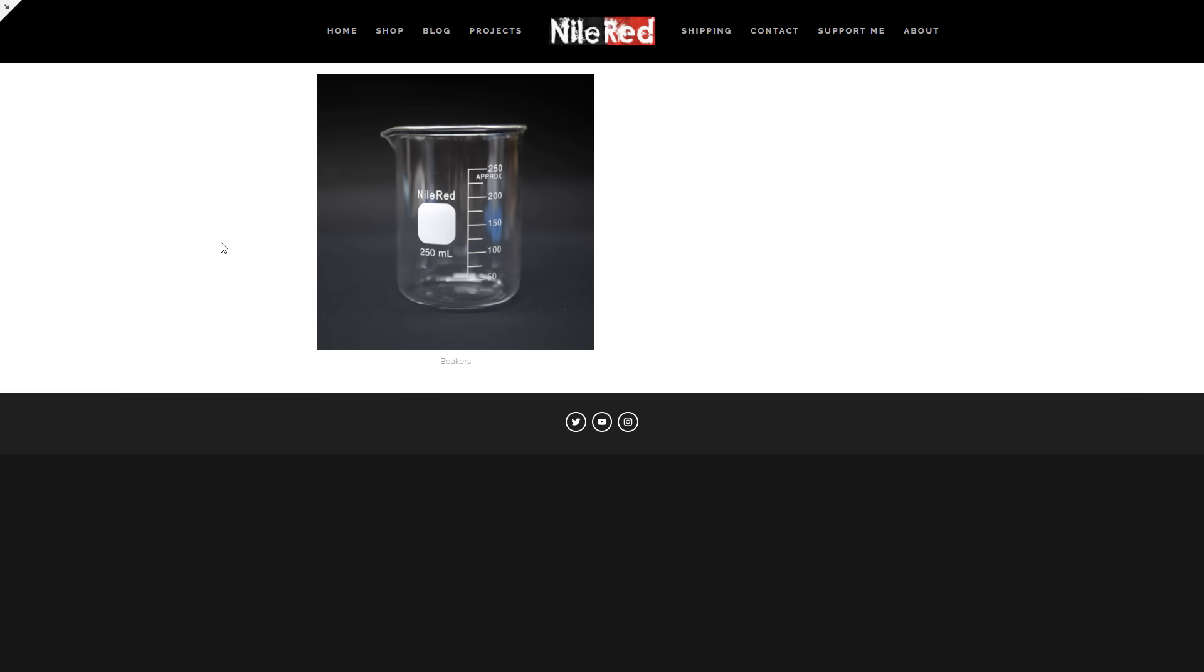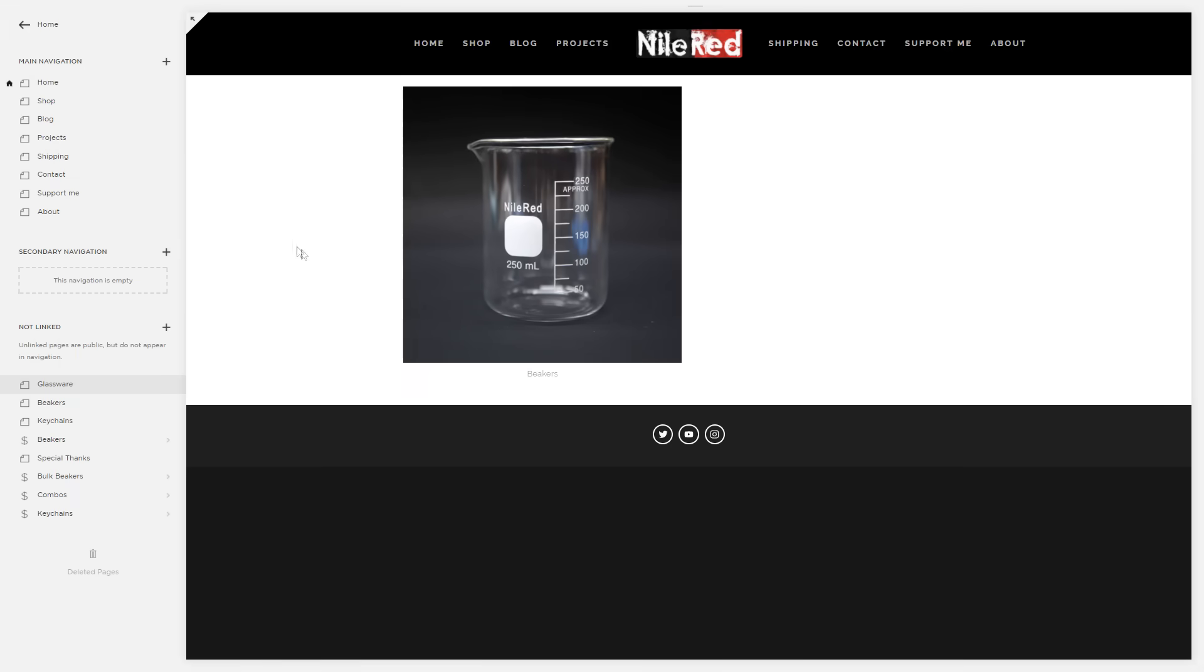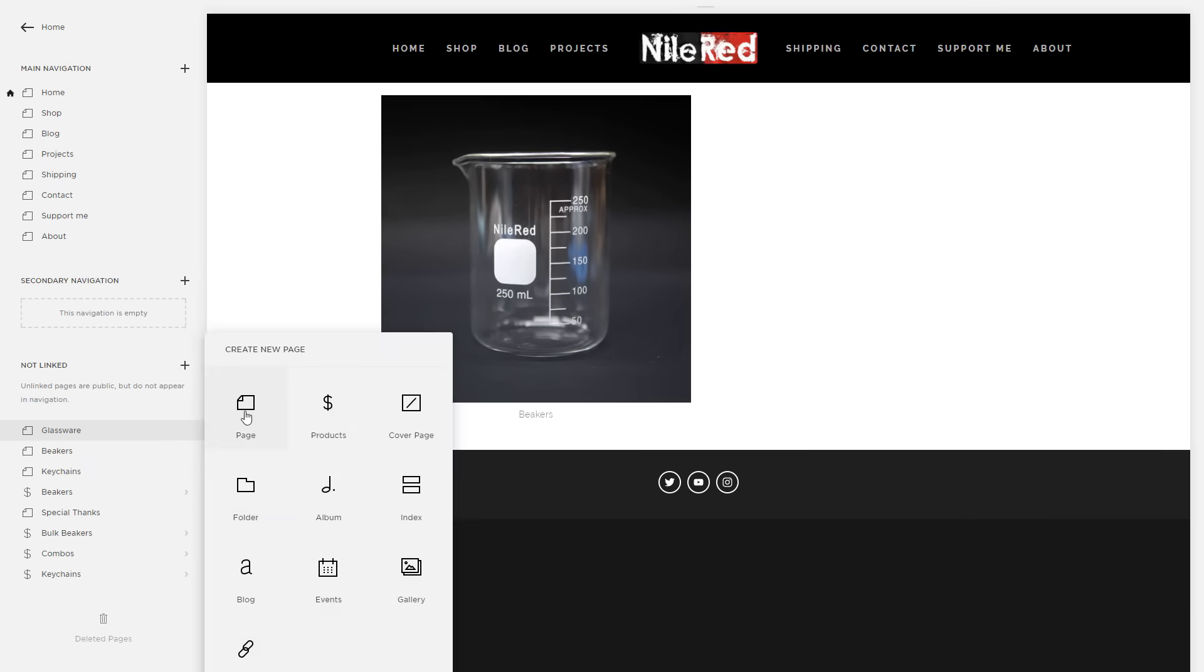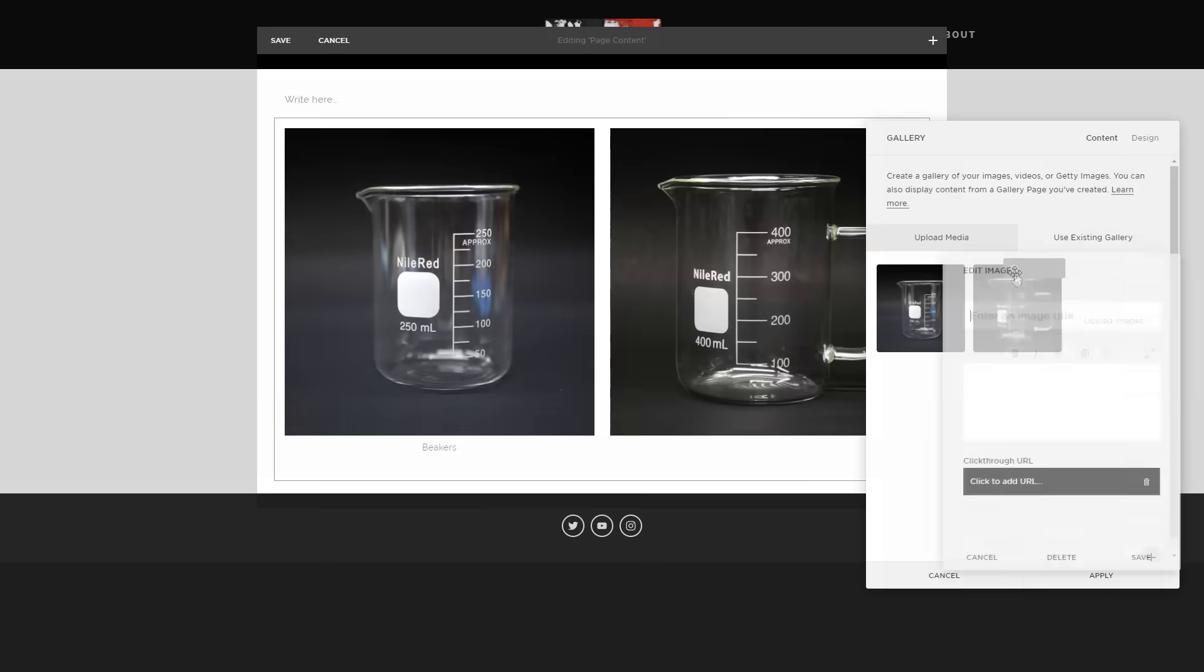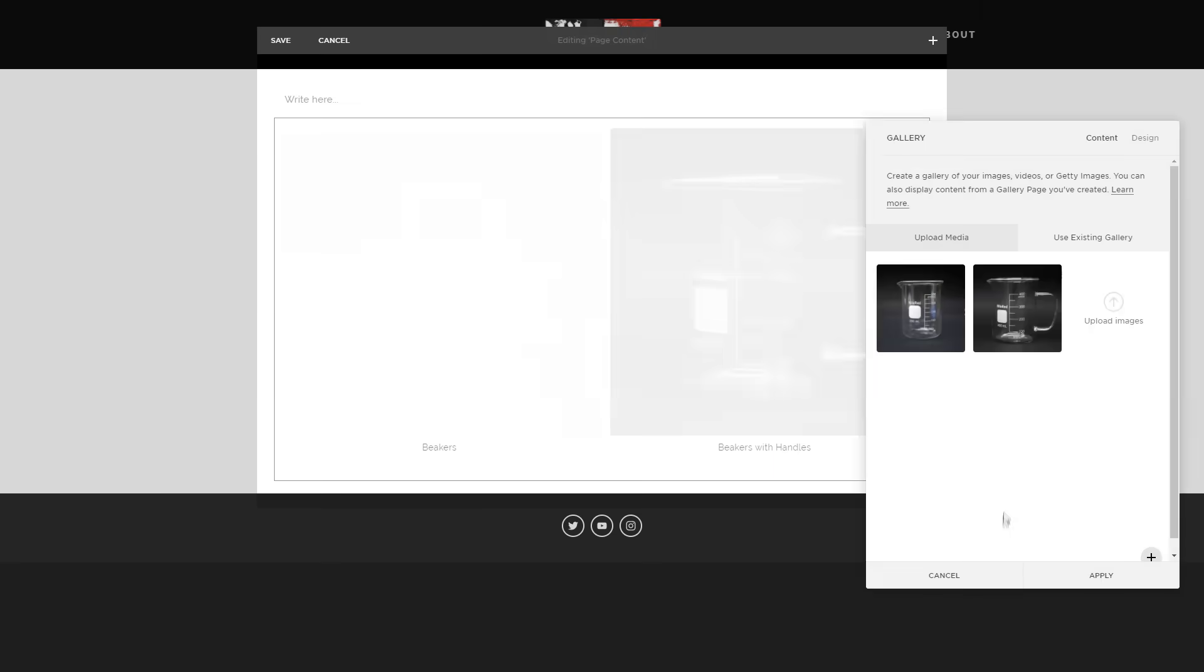Just as an example, I'll be adding one of my products, which is the beaker with a handle. To do this, I start by making a new blank page for the product, and then I link a photo to it. To test it out, I click on the photo, and it works, but the page is still blank.